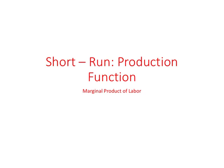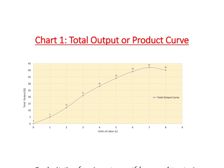In the previous video, we also drew what is called the total output curve, which is a relationship between a quantity of output produced and labor. This is chart 1 from the previous video — the total output curve — showing the relationship between total output produced and the number of workers. We can figure out very easily how much output is produced by the first worker, and we know it is 5 units.